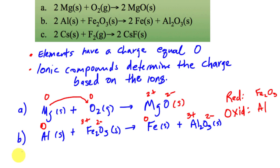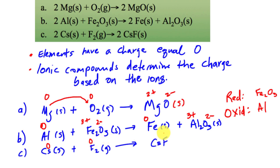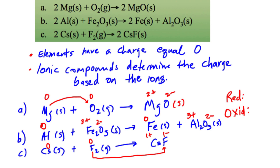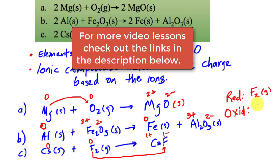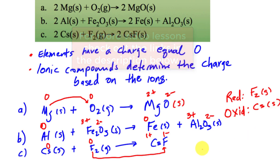For the last example, cesium and F2 are both elements, so they both have a charge of zero. In the product CsF, an ionic compound, fluorine is minus one and cesium is plus one. Fluorine went lower in charge, so it underwent reduction — F2 was reduced. Cesium went up in charge, so cesium solid underwent oxidation. Non-metals take electrons and metals lose them. That's the general background on oxidation-reduction — I'll answer questions and clarify more in class.